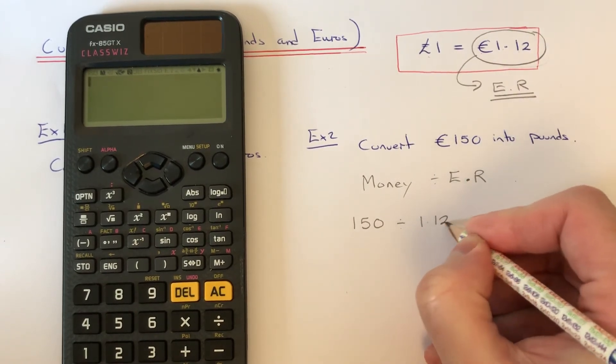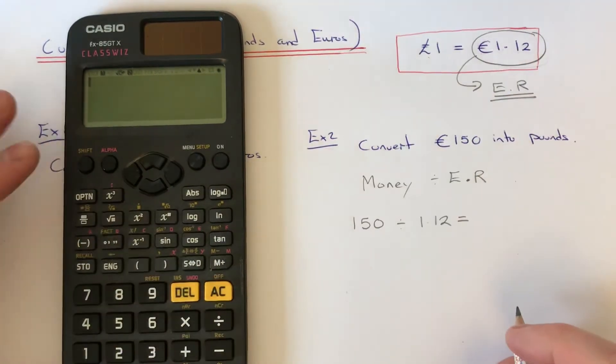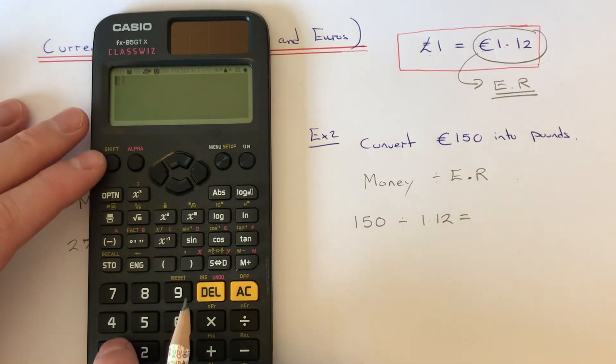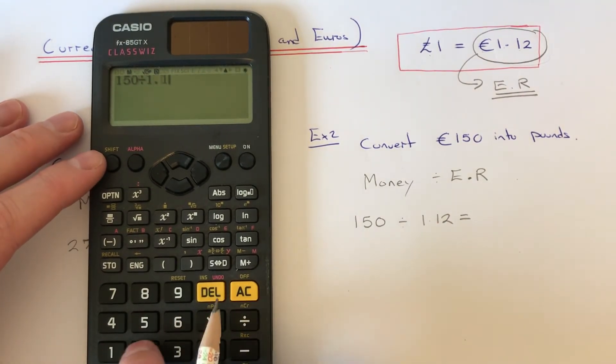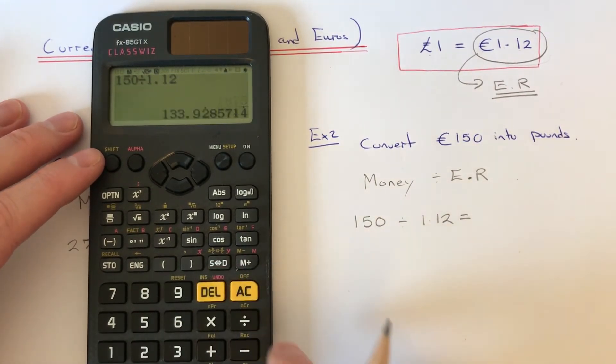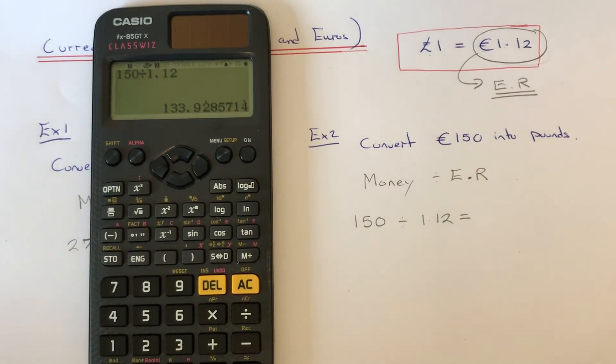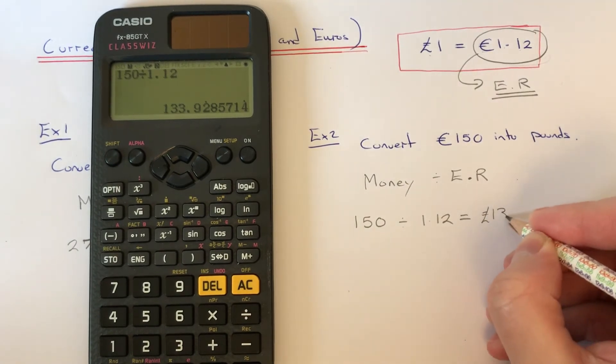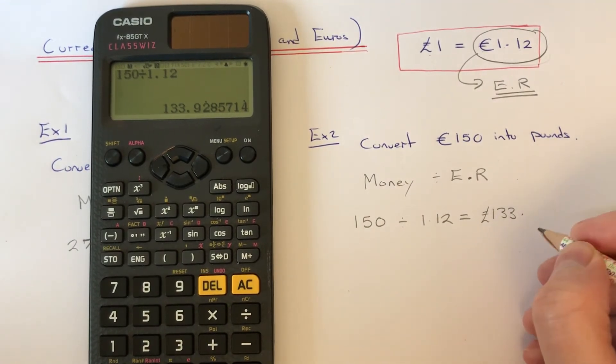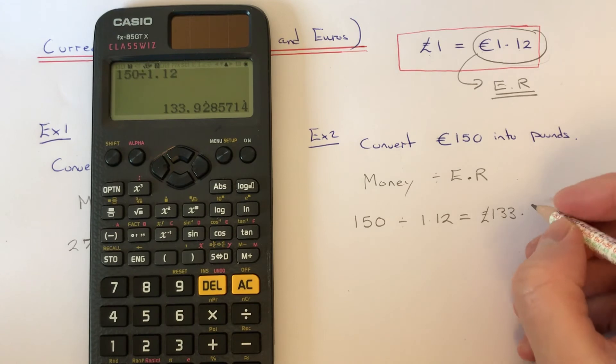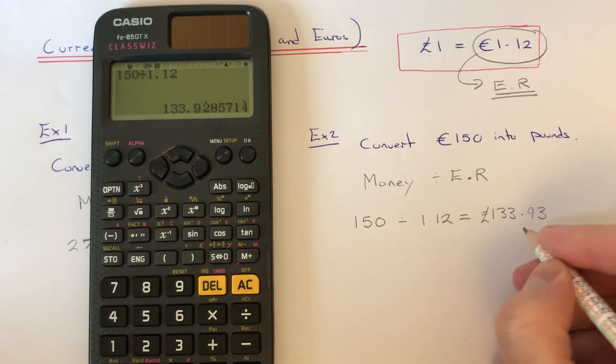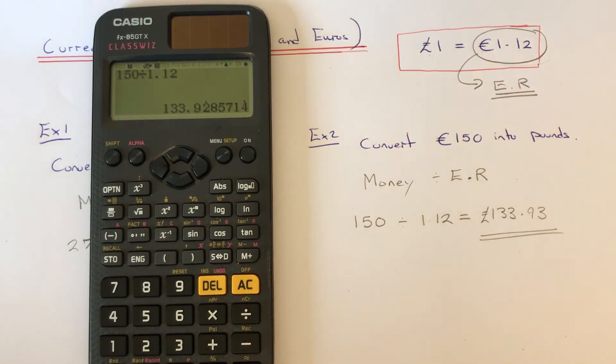Let's just type that in on your calculator again and we get £133... and it needs to be rounded to two decimal places, so it'd be £133.93.